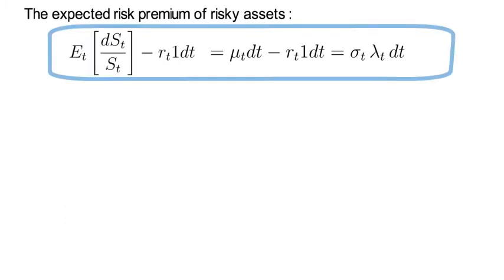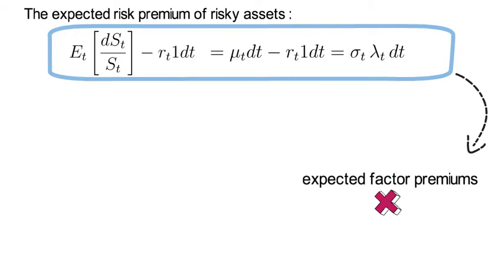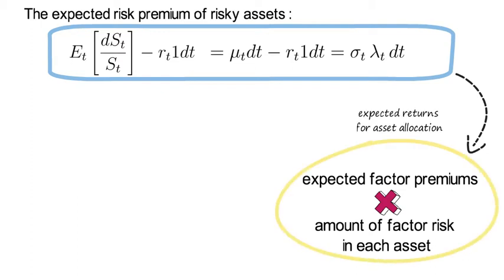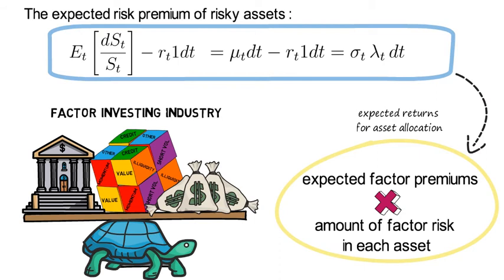Now that last equation also says that if you need expected returns for your asset allocation decision, you can determine these as the product of expected factor premiums and the amount of factor risk in each asset class. Now that underlying rationale is the backbone of the multi-billion factor investing industry.